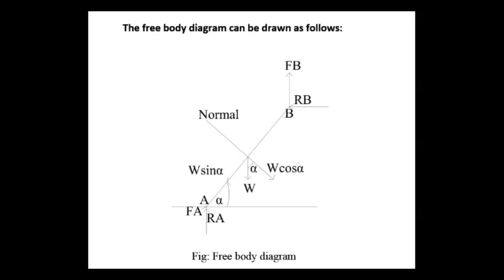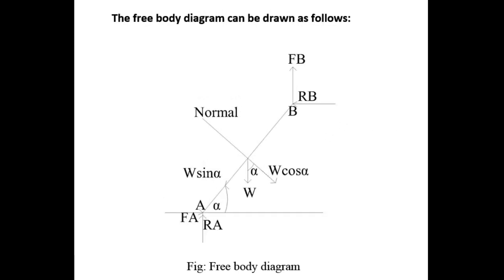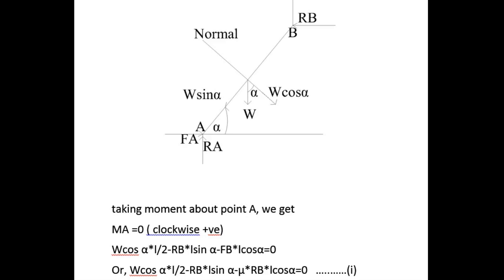The reactions RA and RB will be produced normal to the contact surfaces A and B respectively. When slippage occurs, the ladder will move in the leftward direction at A and the downward direction at B. So at A the friction force will act rightward, and at B it will act upward as shown in the figure. Our aim is to determine angle alpha. From geometry, the weight and normal reaction will make an angle alpha, so resolving weight W gives W cos alpha in the normal direction and W sin alpha along the ladder.